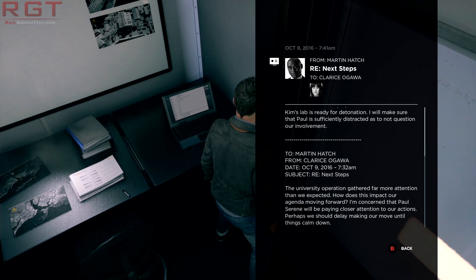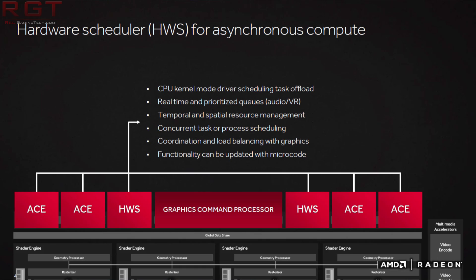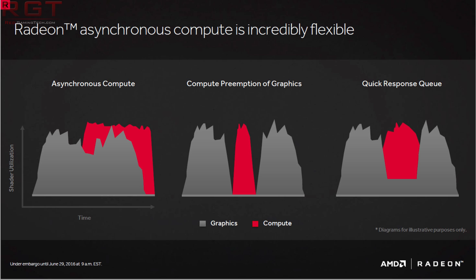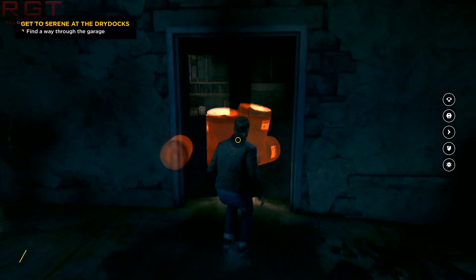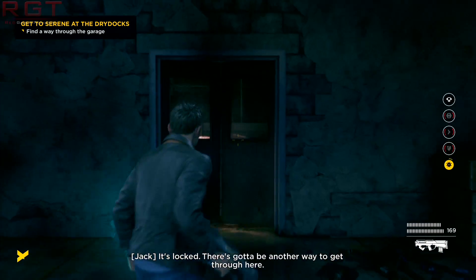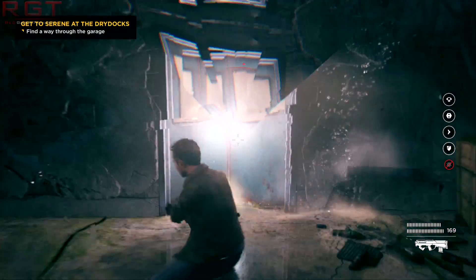There are two hardware schedulers on this card, and from what we can understand this is going to primarily benefit asynchronous compute usage. What it can do is push certain workloads to the front of the stack — if there's a particularly time-sensitive operation it can jump forward in the queue, while something that doesn't need to be completed immediately can wait. This might be very handy for things like warps in virtual reality or even audio, as true audio is now being computed through compute units rather than a dedicated chip, as with previous Radeon cards.